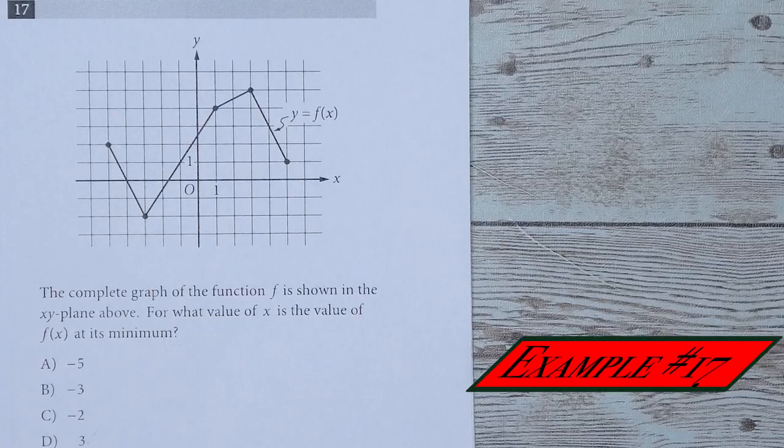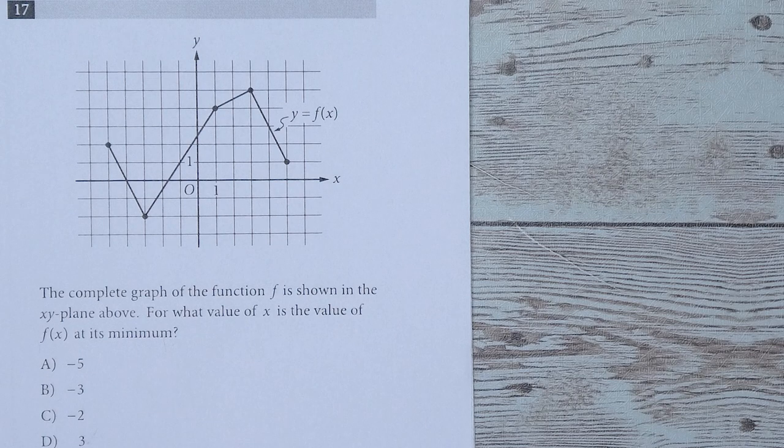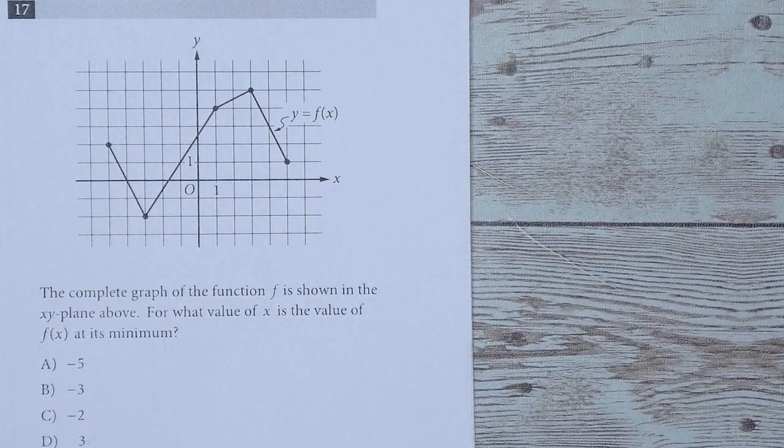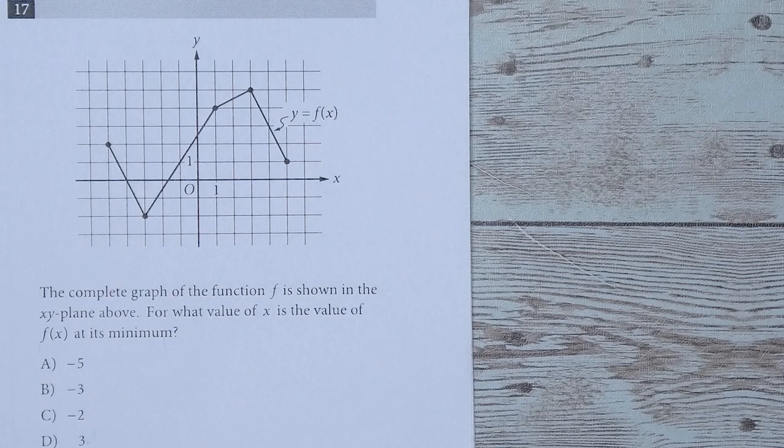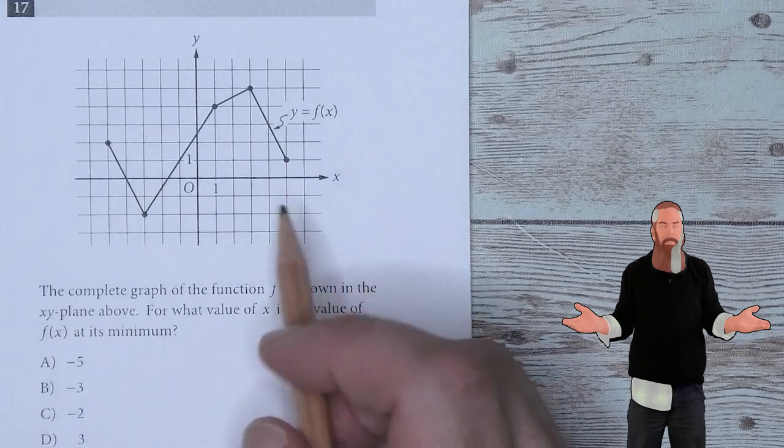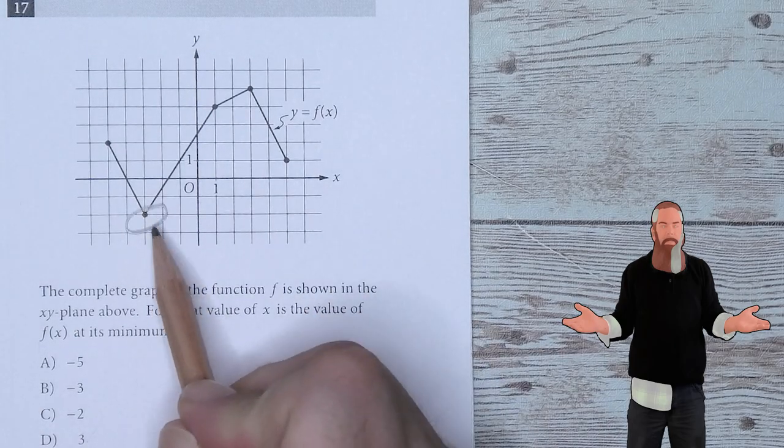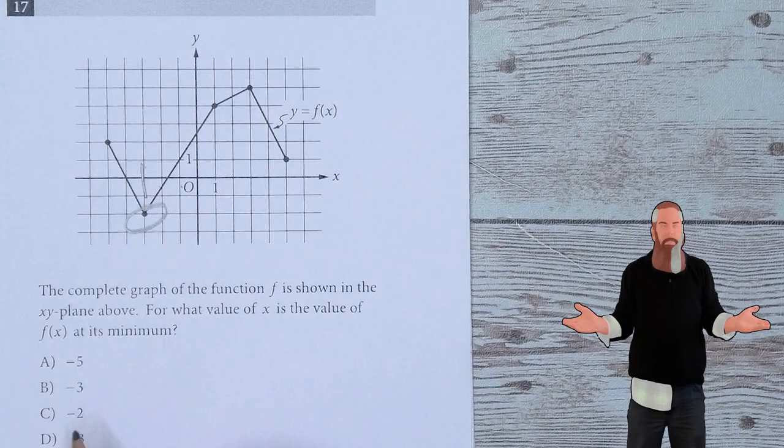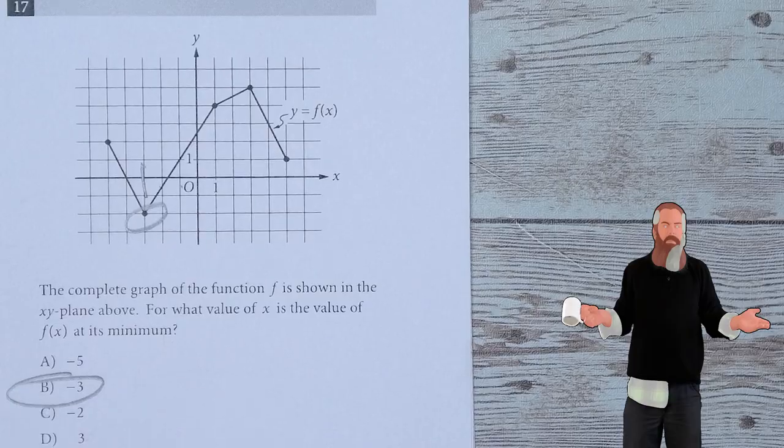The complete graph of the function f is shown in the xy plane above. For what value of x is the value of f(x) at its minimum? At the absolute lowest point, which we can find right here, negative 1, negative 2, negative 3. B is the answer.